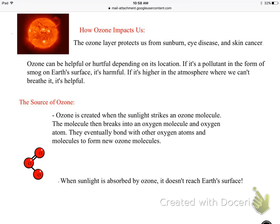Moving on to the ozone — the ozone layer protects us from harmful UV rays and it's located in the stratosphere. The stratosphere soaks up UV rays and prevents severe sunburns, eye disease, or skin cancer. But ozone can be helpful or hurtful depending on where it's located.